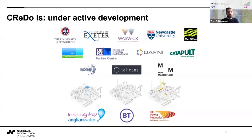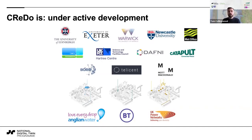The universities and the Met Office are doing some of the interesting modeling work. The University of Edinburgh is looking at system-of-systems modeling — how full systems fail and how you bring them back up. Exeter and the Met Office jointly have the Joint Centre of Excellence in Environmental Intelligence, which is where we're getting our flood information and climate projection data. Warwick and Newcastle are collectively doing expert elicitation work, which we'll come on to in a moment.